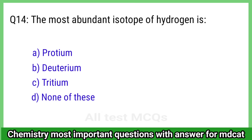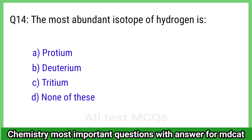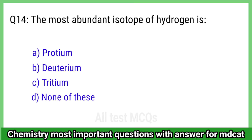Question 14: The most abundant isotope of hydrogen is? The right answer is option A, protium.